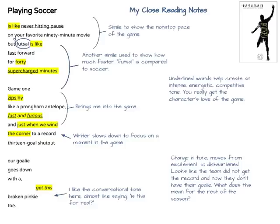An important first step is to closely read the text several times and figure out what the author is doing. Here are my close reading notes. I noted the author uses similes to bring the reader into the game, and they're interesting similes too. He compares soccer to watching a movie and to an antelope. The author chooses words to create an exciting tone in the beginning, like 'fast' and 'supercharged,' 'zips' and 'furious.'